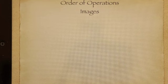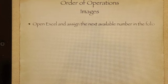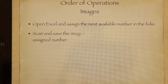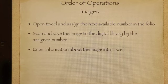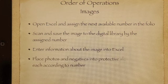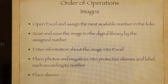This is the order of operations for images: Open Excel and assign the next available number in the folio. Scan and save the image to the digital library by the assigned number. Enter the information about the image into Excel. Place photos and negatives into protective sleeves and label each according to the number. Finally, place sleeves into binders.